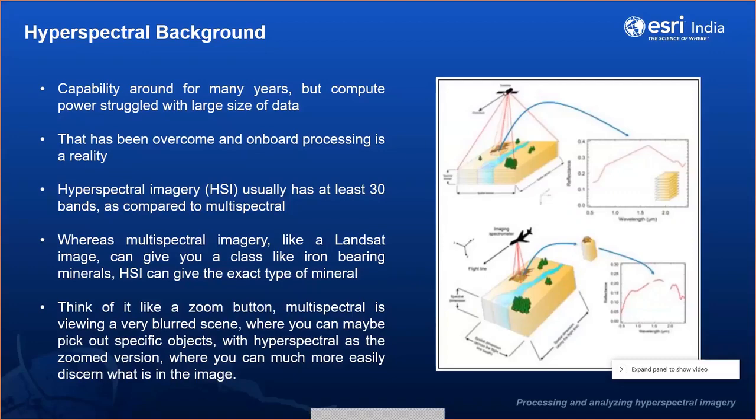Hyperspectral imagery can give you the exact type of mineral because each band and each pixel contains specific information. It's like a zoom button — hyperspectral gives a very detailed view with a lot of information. Multispectral uses a broader scheme: the wavelength curve is very rough, but when you zoom into a particular area, the material spectral curve becomes very smooth.